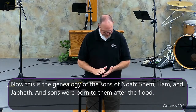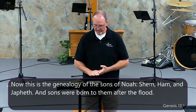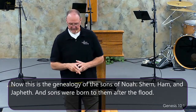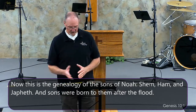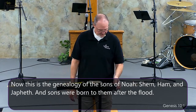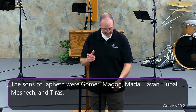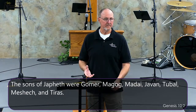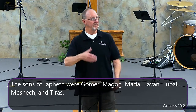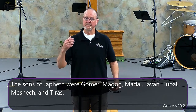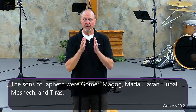Chapter 10 verse 1 gives the genealogy of the sons of Noah: Shem, Ham, and Japheth. Verses 2 through 5 list the sons and descendants of Japheth. I want to bring your attention to verse 2 — the sons of Japheth include Gomer and Magog. We know that name — Gog and Magog. They developed into the people we call the Russians today. They play a major part in God's plan, especially in the end times. They gave the children of Israel a hard time in the Old Testament, and they're going to give Israel a hard time still in the future.